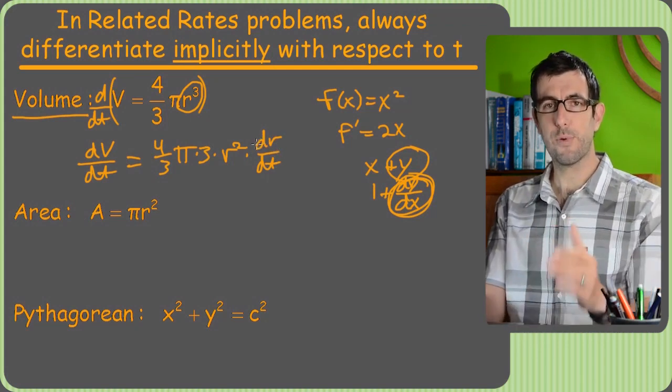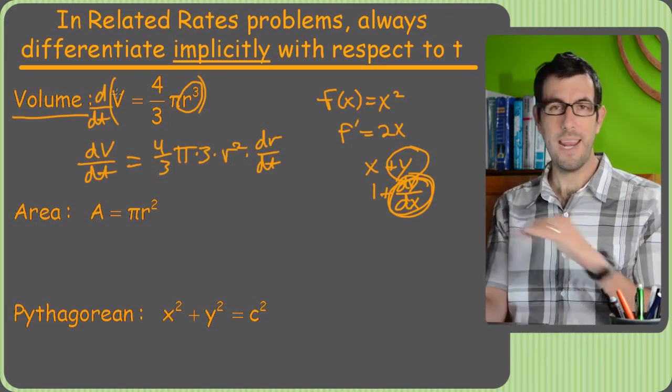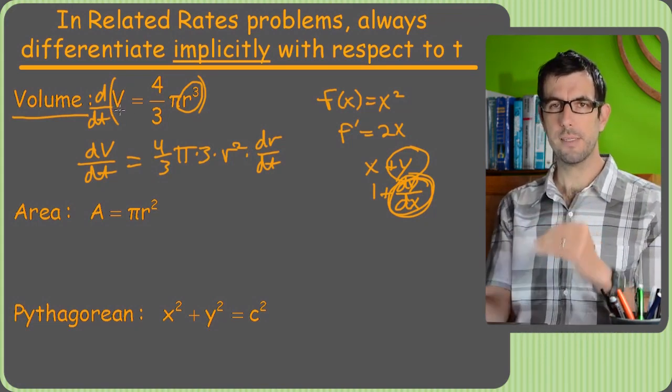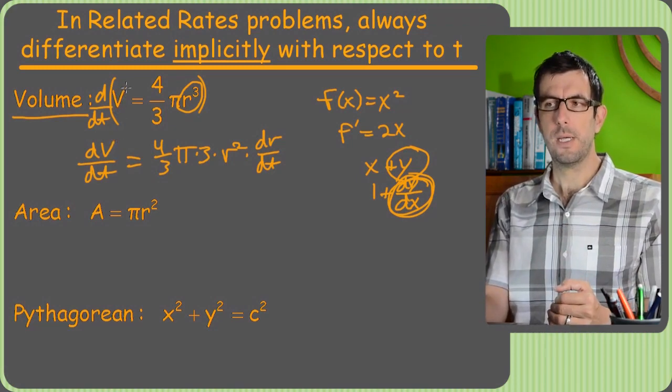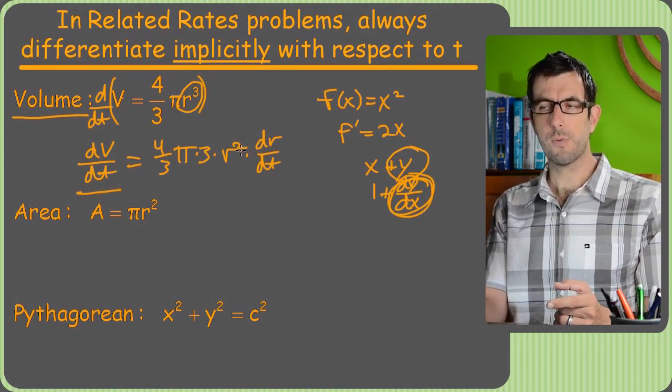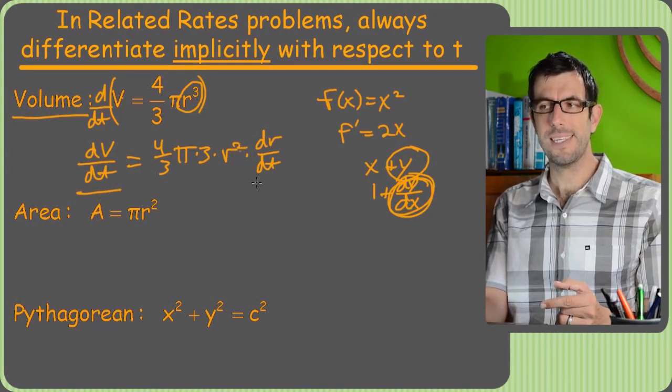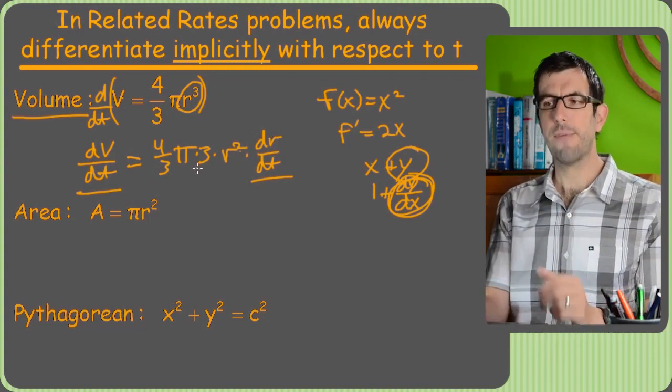So, the deal is that whenever you're taking the derivative of these things in related rates problems, whenever you take the derivative of any variable whatsoever for any reason, with any rule, you're going to have a d whatever dt next to it. Derivative of V is just dV/dt. Derivative of r cubed is 3r squared dr/dt. There's that d letter dt after everything we do.